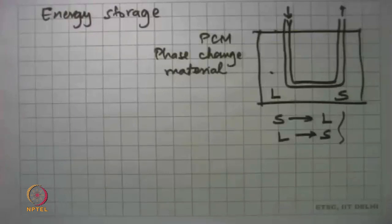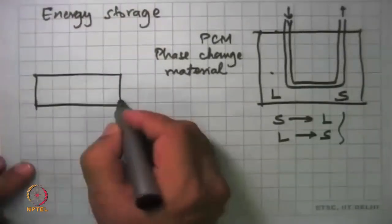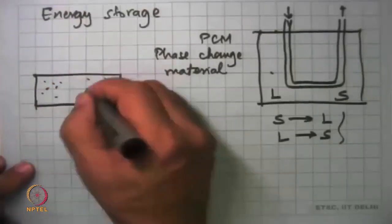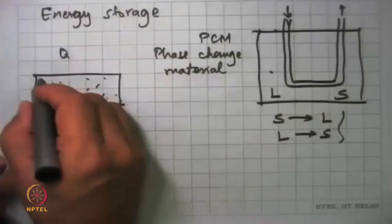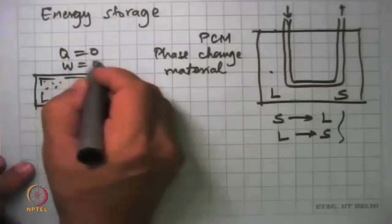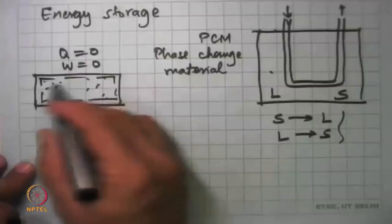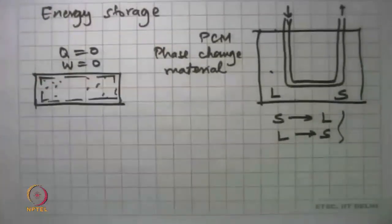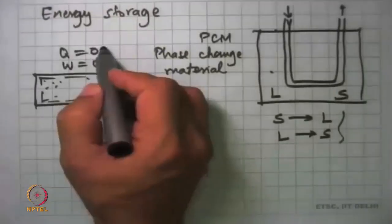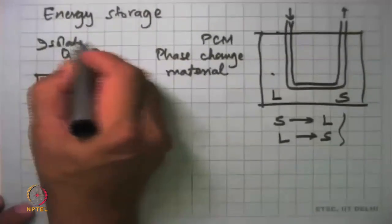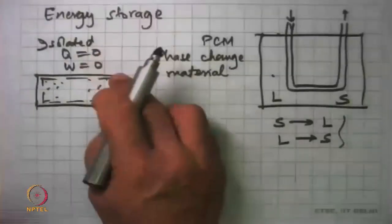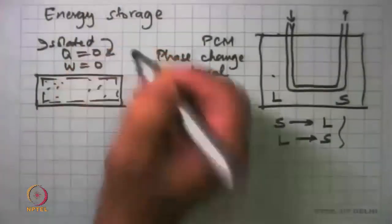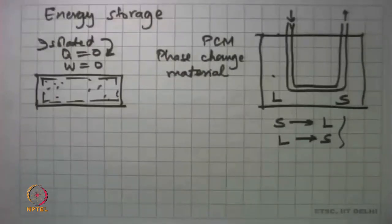Question: in an isolated system, due to work, will internal energy change or not? In an isolated system not in thermodynamic equilibrium — say the pressure here is different than the pressure there — it is isolated, meaning for this system boundary q is 0 and w is 0. We have not yet defined internal energy; when we do that in the next module we will answer this question. But for now, because it is isolated, heat and work are 0.